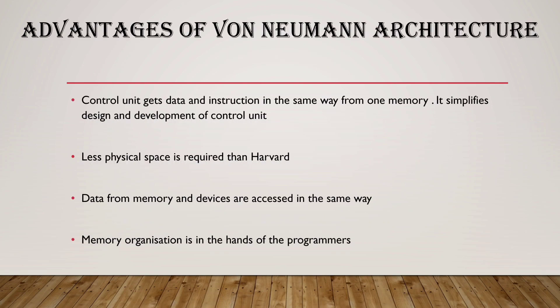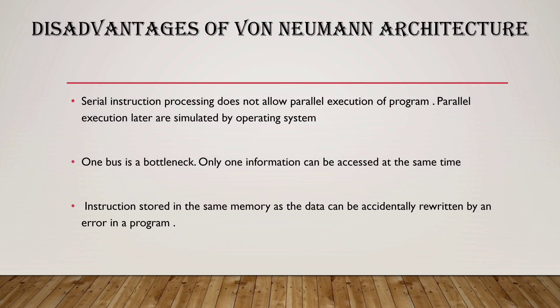Advantages of Von Neumann architecture: The control unit gets data and instructions in the same way from one memory, which simplifies the design and development of the control unit. Data from memory and devices are accessed in the same way. It is cheap and requires less physical space. Memory organization is in the hands of programmers. Disadvantages: Serial instruction processing does not allow parallel execution of programs. One bus is a bottleneck — only one piece of information can be accessed at a time. Instructions stored in the same memory as data can be accidentally overwritten by a program error. Memory leaks from defective programs can cause the computer to crash due to insufficient memory.